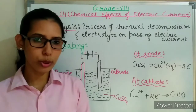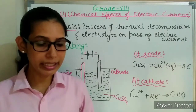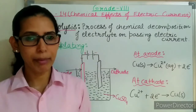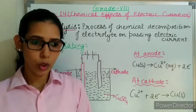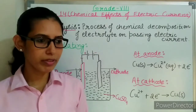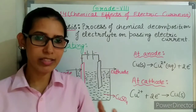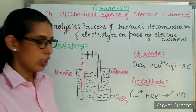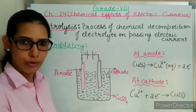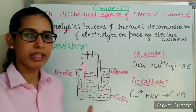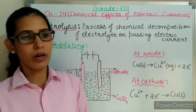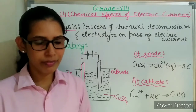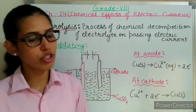When electric current passes through any conducting liquid, it causes some kind of chemical changes. We will know that chemical changes have taken place because they will be visible to us — either in the form of gas bubbles at the electrodes, or there will be some deposition of metal on any of the electrodes, or there may be a change in the color of the solution.